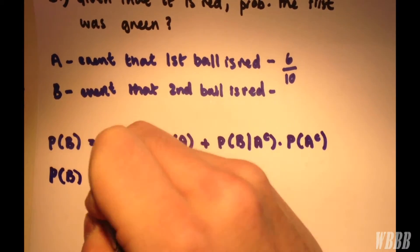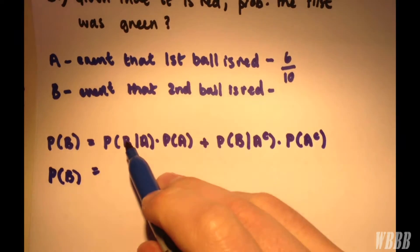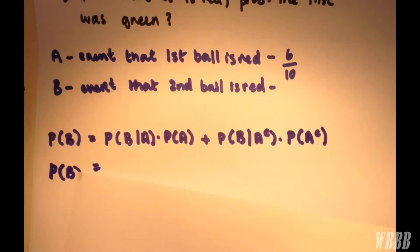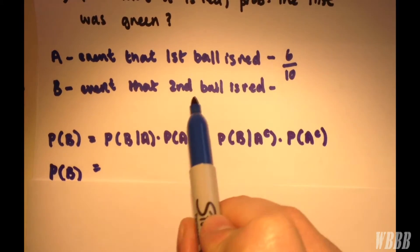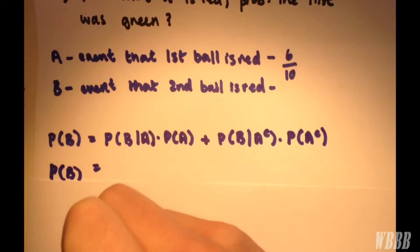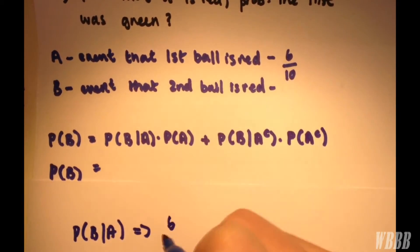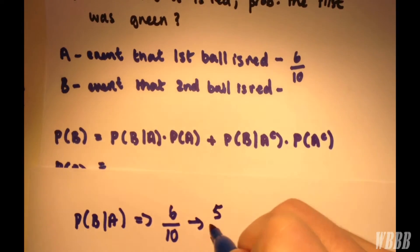It's as simple as plugging all the values in. How do we know probability of B given A? Well, P(B|A) is the probability that the second ball is red given that the first is red. The chances of drawing a first red ball are 6/10, at which point we end up with 5/9.